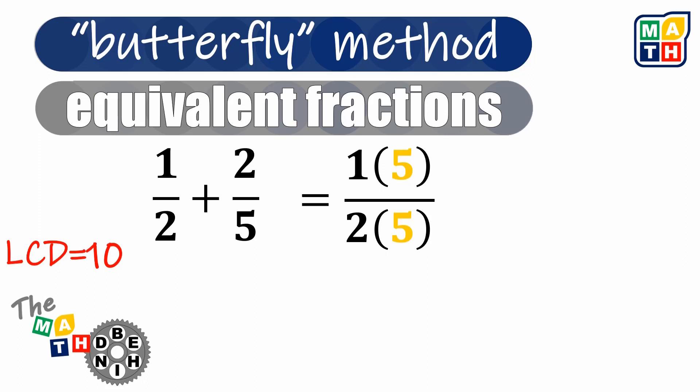As for 2 fifths, we need to multiply both the numerator and denominator by 2 to get a denominator of 10. 2 fifths now is changed. Now that both denominators resolved to 10, let us now combine the two fractions.